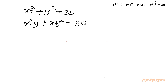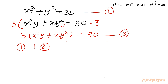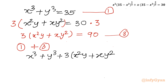Now multiply equation 2 by 3 on both sides. So 3 times (x squared y plus x y squared) equals 90. This is equation 3. Now add equation 1 with equation 3. So we get x cubed plus y cubed plus 3 times (x squared y plus x y squared) equal to 35 plus 90.